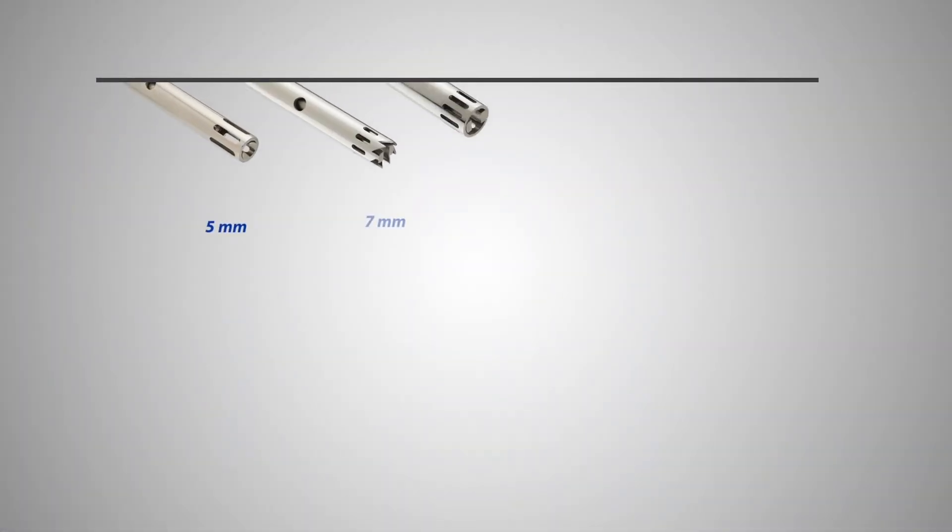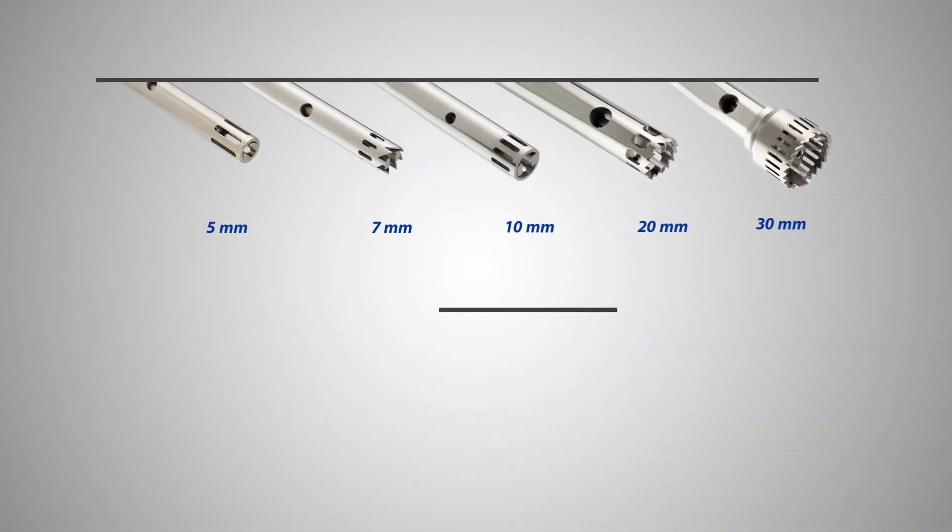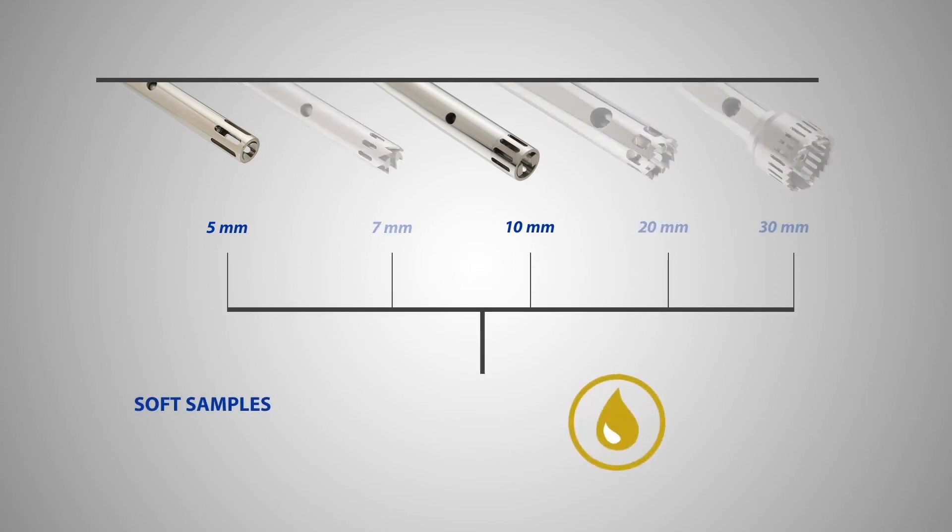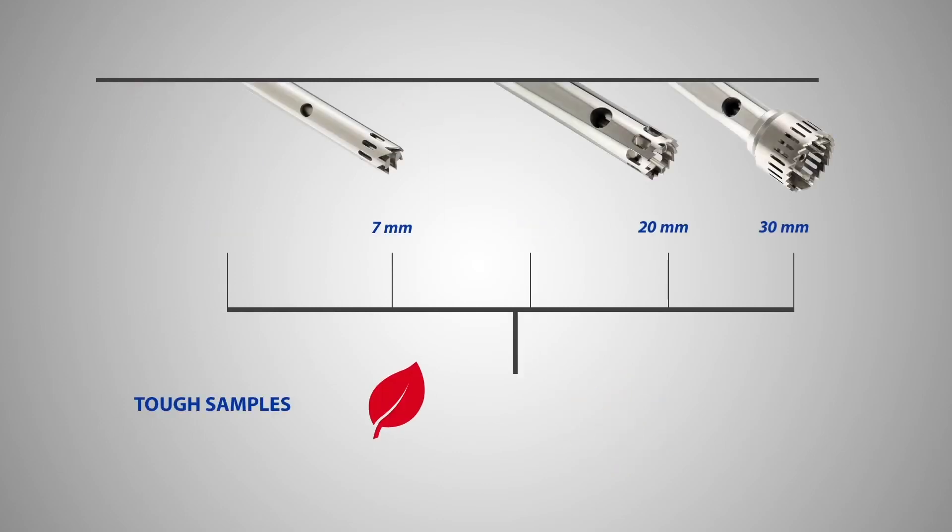The Omni GLH 850 is compatible with the widest range of generator probes from 5 mm to 30 mm in diameter. It is able to create fine emulsions by using the flat bottom generator probes or process tougher samples by using the sawtooth generator probes.